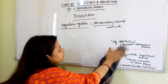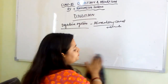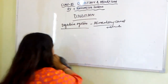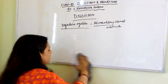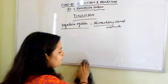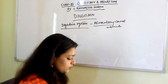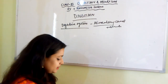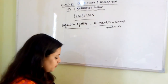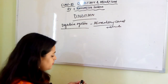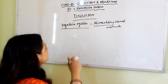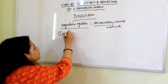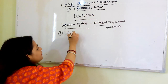Next we will talk about the glands associated with the alimentary canal. There are four glands basically, starting with the salivary glands.